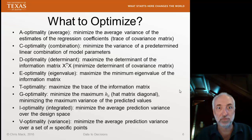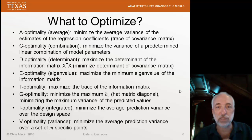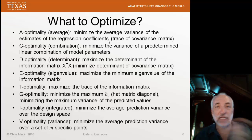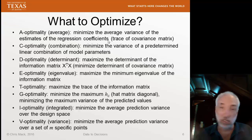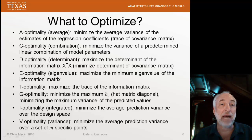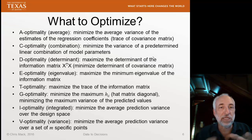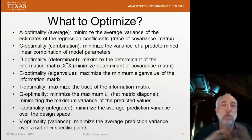The next question is: what do you optimize? There's a lot of things you can optimize for. A-optimality — A stands for average — means we minimize the average variance of the estimates of the regression coefficients. We take the standard error squared for each coefficient, sum them all together, and try to minimize that. In other words, we're minimizing the trace of the covariance matrix. C-optimality, however, says I don't want to minimize the variance of every single regression coefficient, but rather I'm going to pick a couple of regression coefficients — the ones that are important to me — create some predetermined linear combination of those model parameters, and minimize the variance of them.